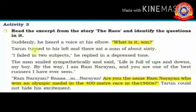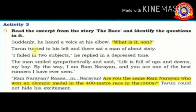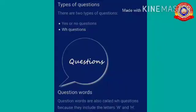Now look at Activity 3: read the excerpt from the story 'The Race' and identify the questions in it. You can identify a question by the question mark at the end. For example: 'What is it?' and 'Are you the same Ram Narayan who won an Olympic medal in the 400 meter race in 1960s?' There are two types of questions: yes/no questions and WH questions.